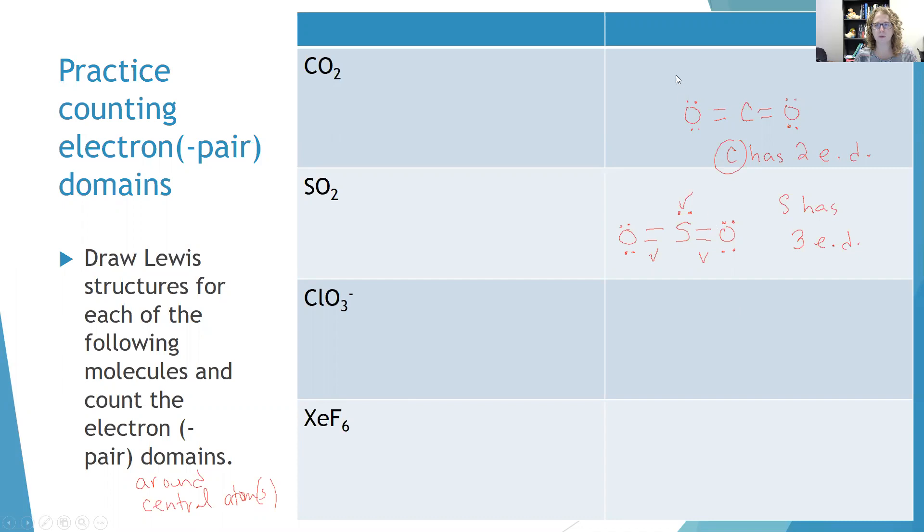Let's move on to ClO3 minus. Chlorate ClO3 minus has resonance structures. So I've drawn the three options here. And yes, you notice that that chlorine has an extra lone pair around. It has an expanded octet. Doesn't matter, right? All the formal charges are down to zero and chlorine's in the third period. So it's allowed to do that. Resonance structures also don't matter towards electron domains because remember doubles and singles count the same thing. And in all of these, you have an electron domain here, here, here, and the lone pair. So chlorine has four electron domains. It doesn't matter where they're placed because they all count the same. So four electron domains.